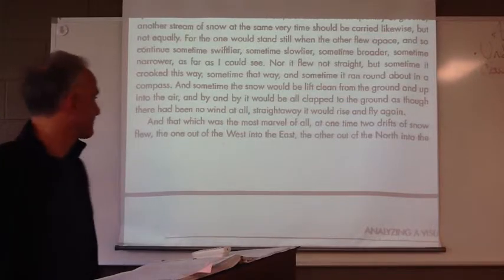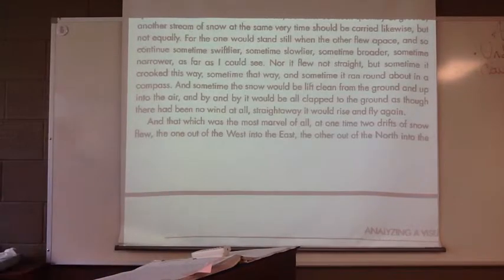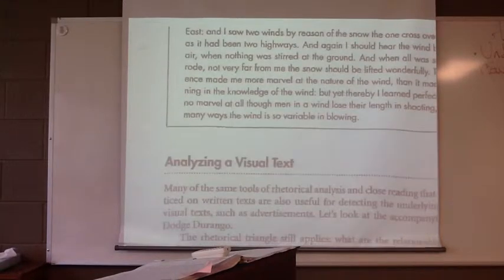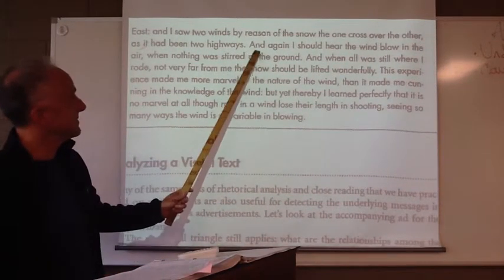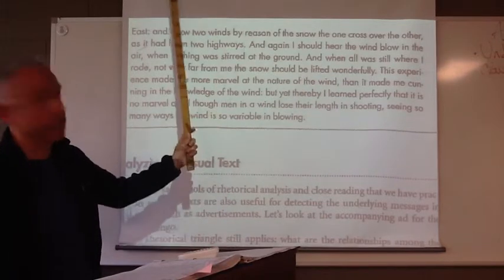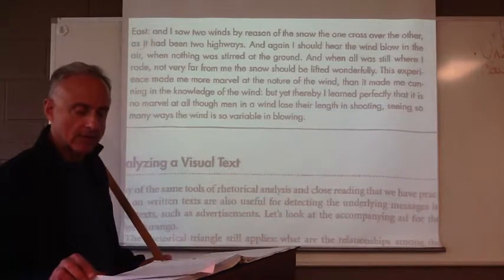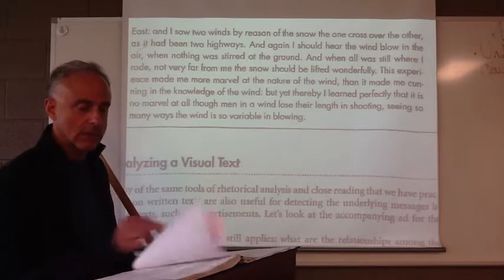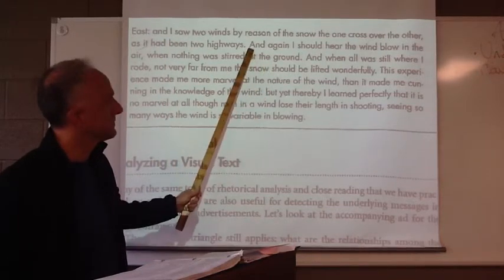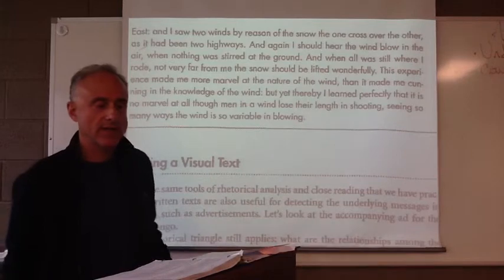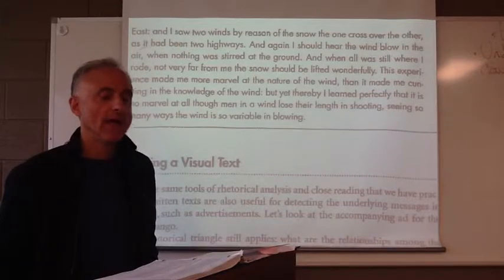Now, the final paragraph has the word 'and' — and that's definitely anaphora. 'And' begins his independent clauses. It started on the earlier page. What's the purpose? In the earlier page he had 'and that was the most marvel of all,' and now he has 'and I saw two winds,' 'and again I could hear,' 'and when' — at least four times he has it.